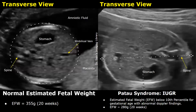In this example, the normal fetal weight at 20 weeks is usually around 355 grams. But in a growth-restricted fetus, the estimated fetal weight was 280 grams at 20 weeks. This is just an example of a growth-restricted fetus.